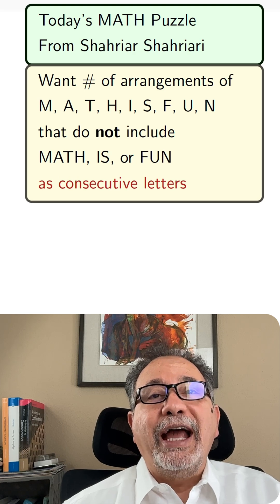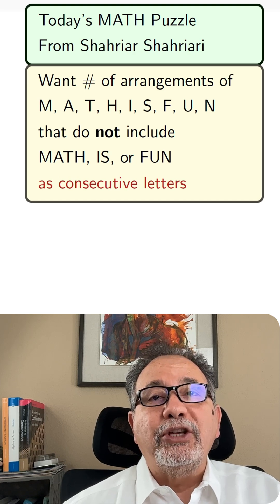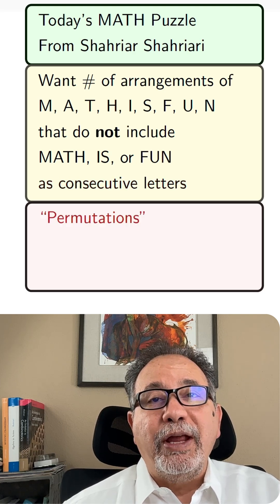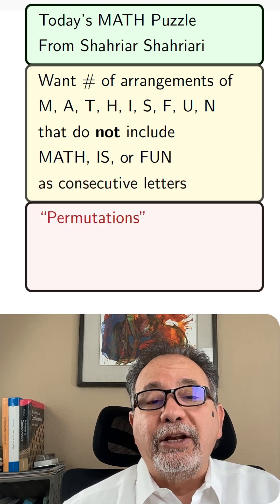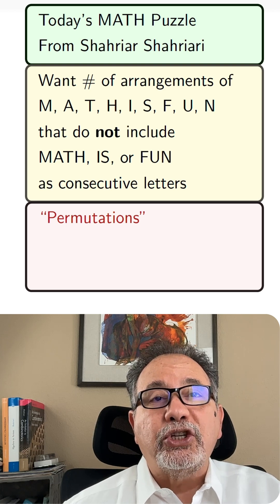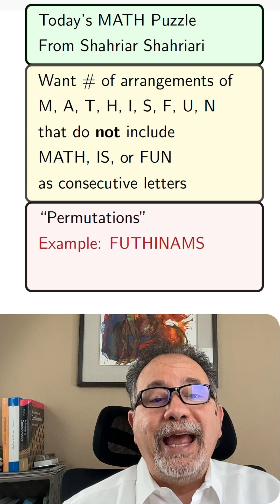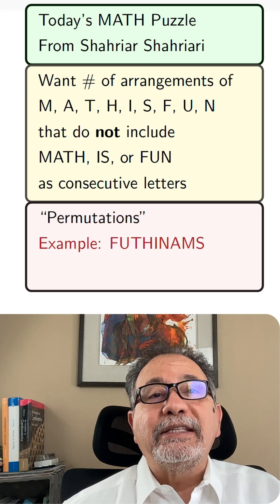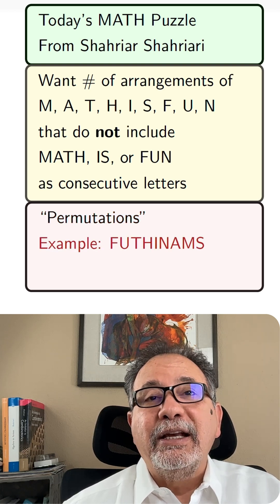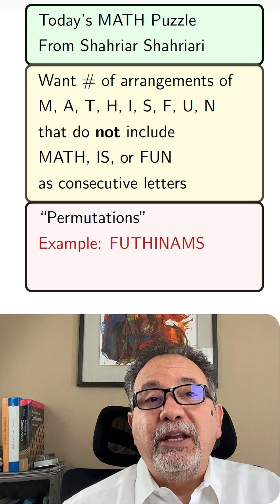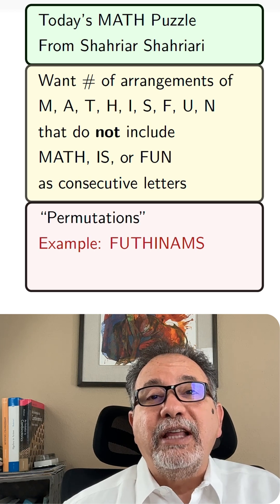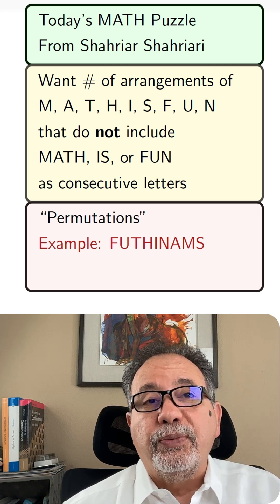These are nine letters, and you can arrange them in a row in many different ways. In mathematics, such an arrangement where order of the letters matters is called a permutation. One example is F-U-T-I-N-A-M-S. The permutation doesn't have to be an actual meaningful word, just a listing of the nine letters in order.